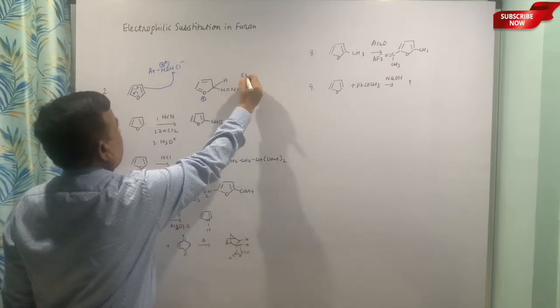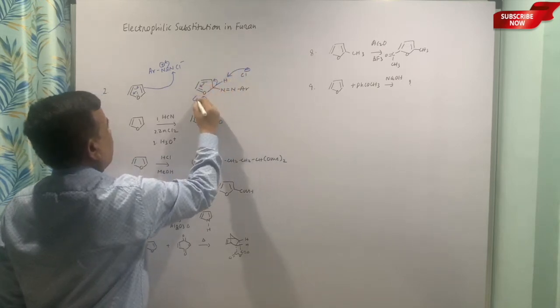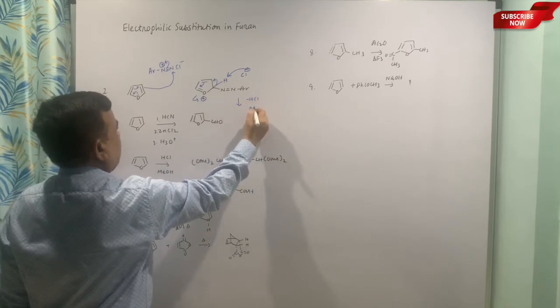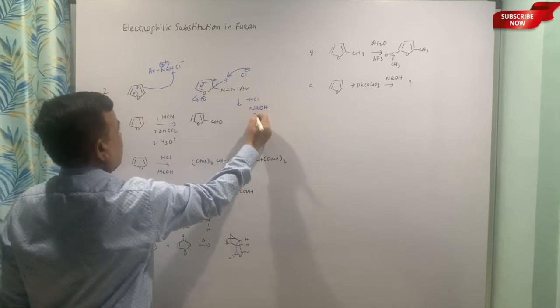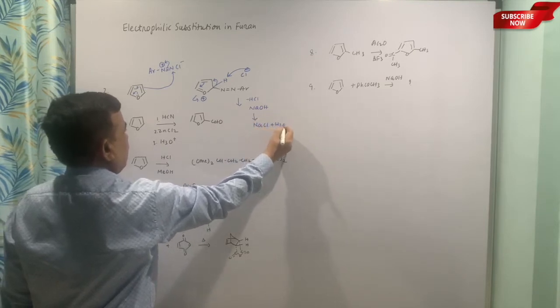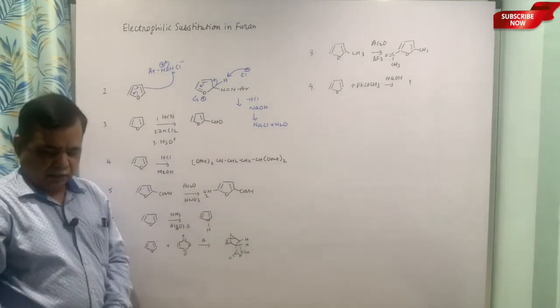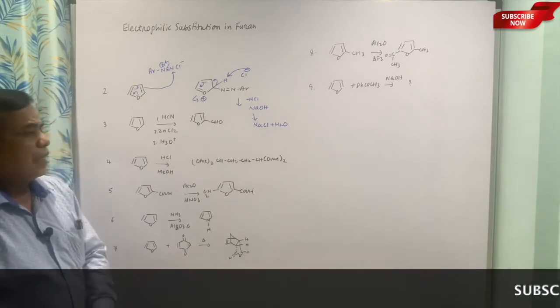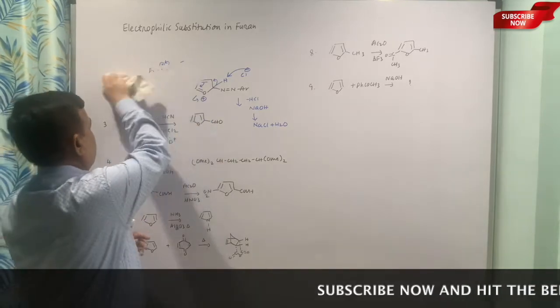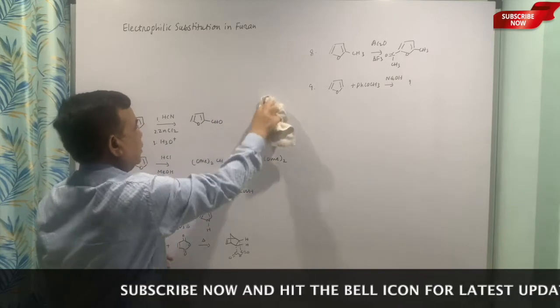Then the intermediate also we will put, so it will be plus, and then this proton is there. Cl⁻ can abstract this proton and it will be lost as HCl. NaOH will take care of this and it will give NaCl and water. So ultimately the role of NaOH is also defined—it will trap the HCl and promote the reaction, so the rate of forward reaction will be higher in this case.